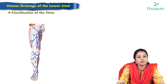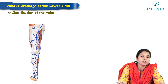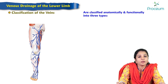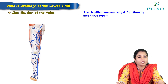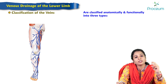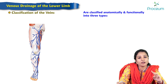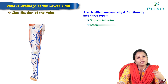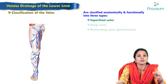Let us classify the veins of the lower limb. Anatomically and functionally, the lower limb veins can be classified into three types: superficial veins, deep veins, and perforating veins.